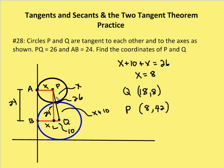I know that AP is equal to X. I know that PL is equal to 24 — we're given that. And P to Q is equal to 26. A to P is X, so B to L is also X. I know that LQ is going to be 10. I get a Pythagorean triple 10, 24, 26 — so LQ ends up being 10. Or you can use the Pythagorean theorem to figure out that LQ equals 10.